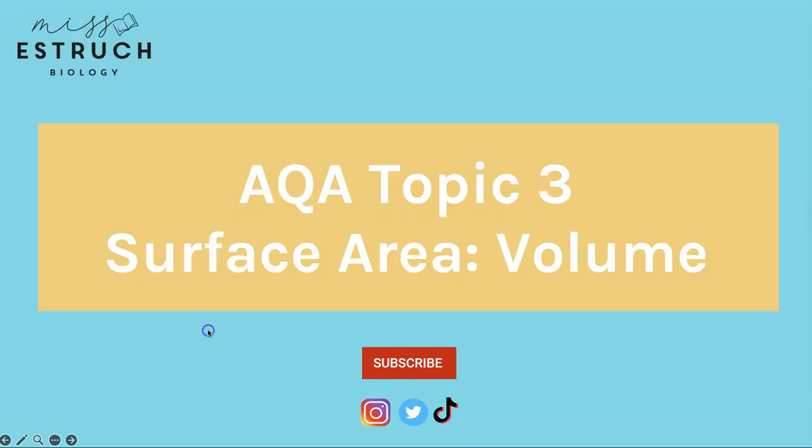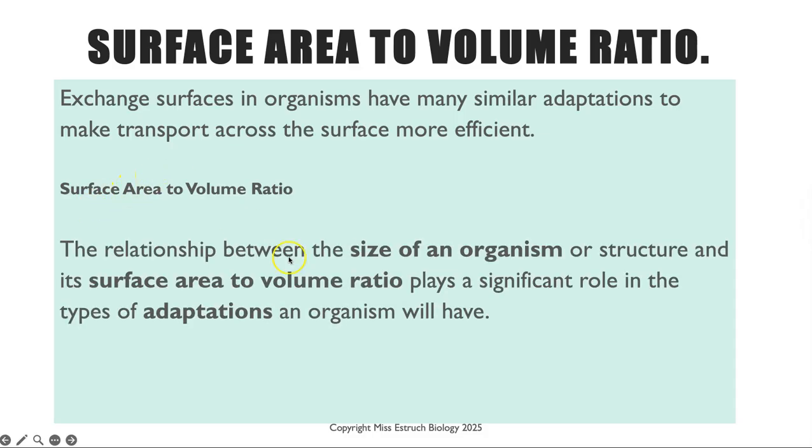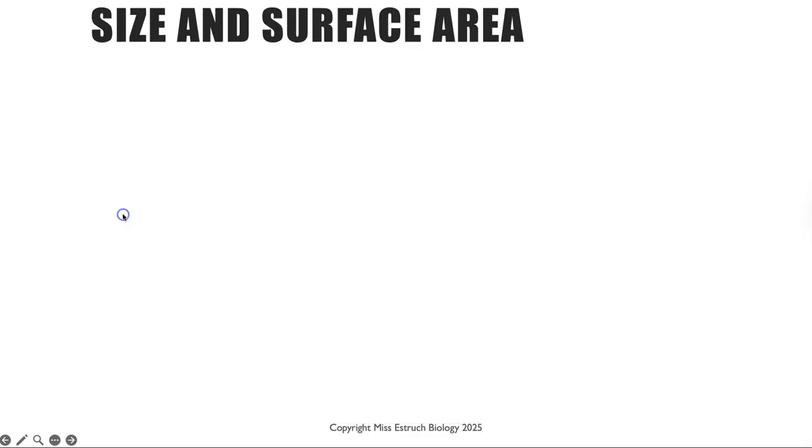This is a tiny part of the specification and it starts by knowing that this is linked to exchange surfaces. The exchange surfaces in organisms have many similar adaptations to make the transport across that surface more efficient. One of those being a large surface area compared to the volume, or in other words the surface area to volume ratio, and this is the relationship between the size of an organism or the structure and its surface area to volume ratio plays a significant role in the types of adaptations an organism will have.